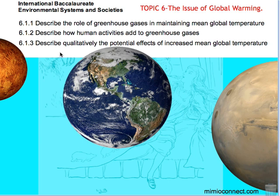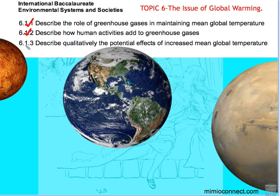Welcome again. Today we consider Topic 6: the issue of global warming. We describe the role of greenhouse gases in maintaining global temperature, describe how human activities add to greenhouse gases, and describe qualitatively the potential effects of increased mean global temperature.